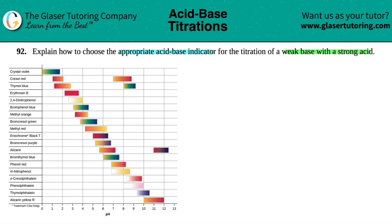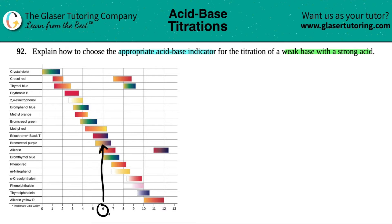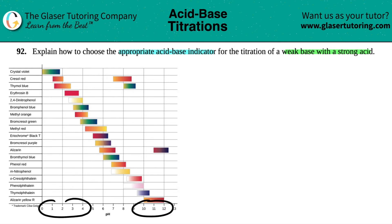That's why some acid-base indicators are better than others. If you need to see what's happening around a pH of, say, six, you wouldn't choose an indicator that isn't changing color anywhere near pH six. These indicators show you what's happening at certain pH values.